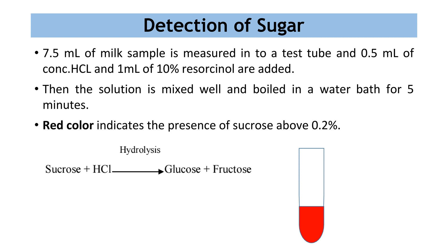Now let's see how to detect sugar. For that, 7.5 ml of milk sample is measured into a test tube and 0.5 ml of concentrated HCl and 1 ml of 10% resorcinol are added. Then the solution is mixed well and boiled in a water bath for 5 minutes. Red color indicates the presence of sucrose above 0.2%. Here you can see how sucrose reacts with HCl and forms glucose and fructose.